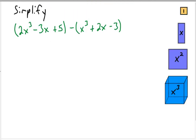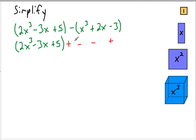Let's go on to another example. Again we're going to simplify, which in this case means subtract. However, what I really want you to do is add the opposite. So I'm going to write the first one: 2x cubed minus 3x plus 5 — notice no changes. Now instead I'm going to change this to a plus, and make each term the opposite: negative x cubed, negative 2x, and positive 3. So notice how everything's changed — positive to negative, positive to negative, and negative to positive.